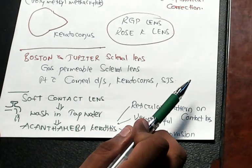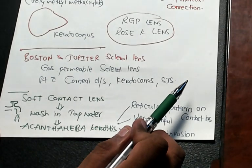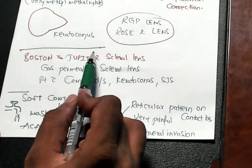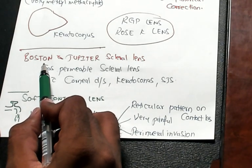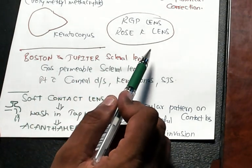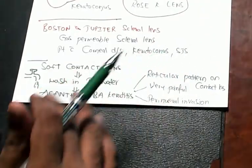Keratoconus, Stevens-Johnson syndrome, you use Boston and Jupiter. Boston means you get Harvard medical degree. So Boston and Jupiter scleral lens.